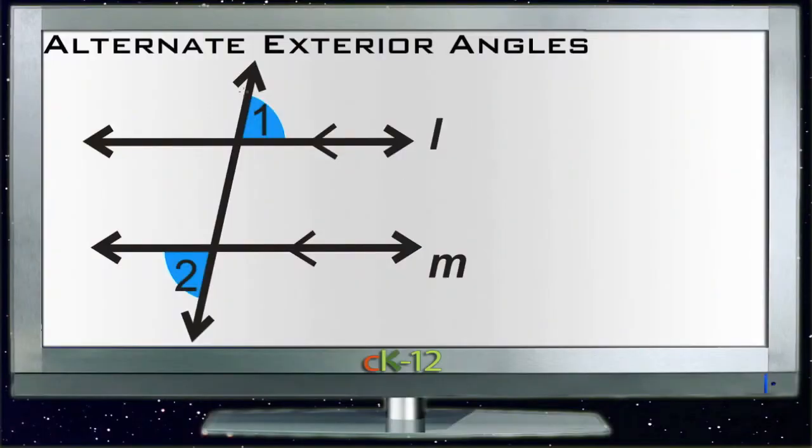Alternate exterior angles are sort of the natural companion to alternate interior angles. Obviously the only difference being the fact that they are on the exterior, which means that they're on the outside of the little shape formed by our two parallel lines.